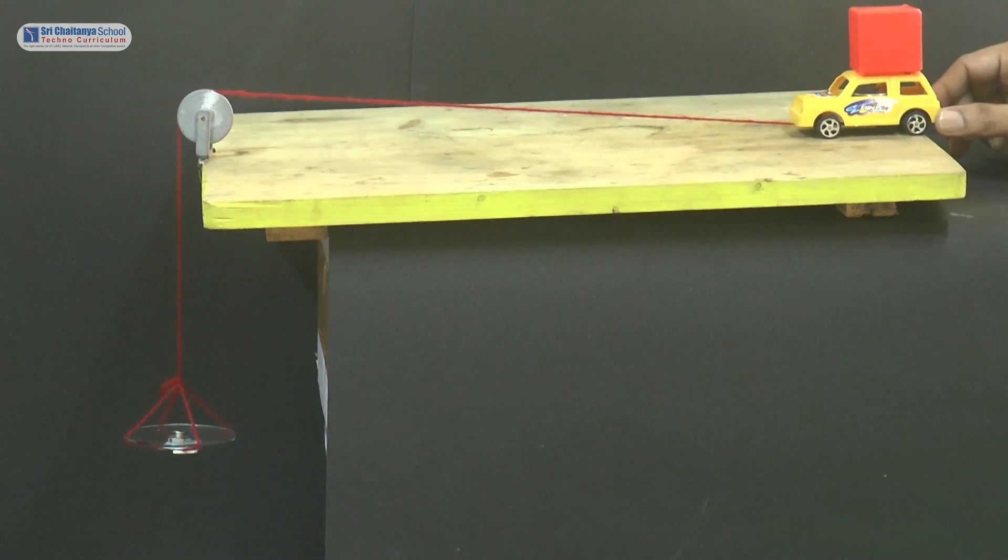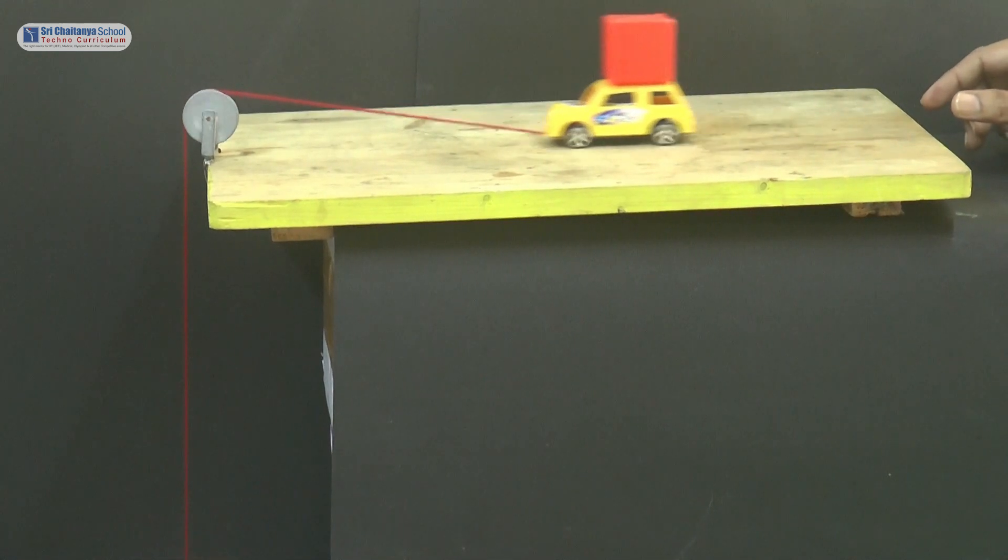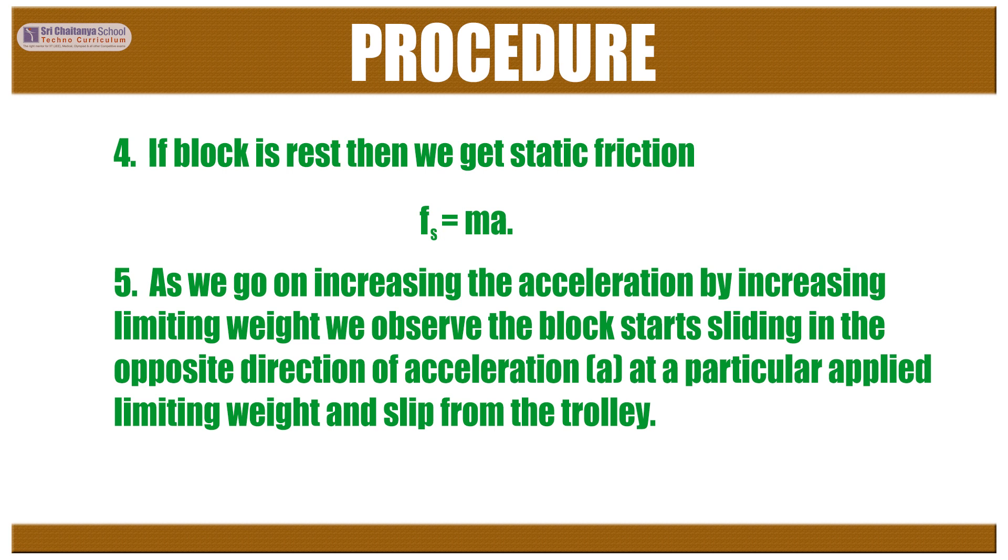We will notice that the trolley with the block on it moved towards left with an acceleration. The block is observed to be at rest with respect to the surface of the trolley. Even it experiences a force equal to the product of its mass and acceleration produced. But it is in motion with respect to the surface of the table. If block is at rest then we get static friction Fs equals Ma.